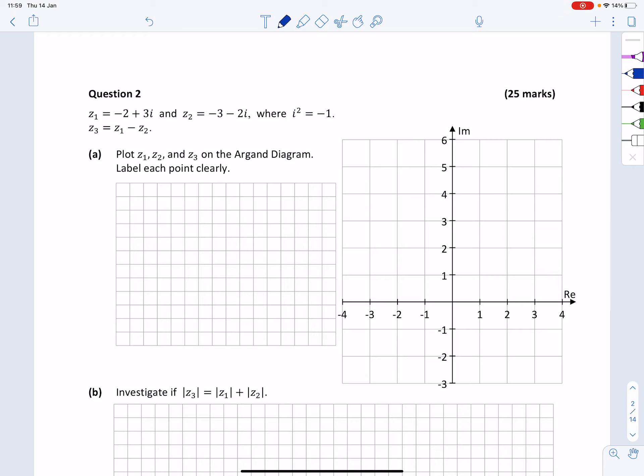Let's find out what Z3 is, because we need to plot Z1, Z2, and Z3 on the Argand diagram to the right. So Z3 is Z1 minus Z2. Substitute the values in to get minus 2 plus 3i, minus minus 3 minus 2i. Get rid of the bracket, minus 2 plus 3i. Minus minus is a plus, minus minus is a plus, to get 1 plus 5i.